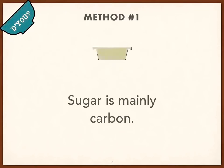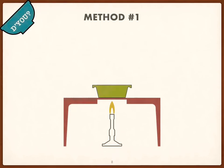Those who have interest in chemistry may know that sugar is mainly carbon. So, if we heat the mixture strongly, the carbon particles in sugar will cause it to turn black while the salt will remain as it is.